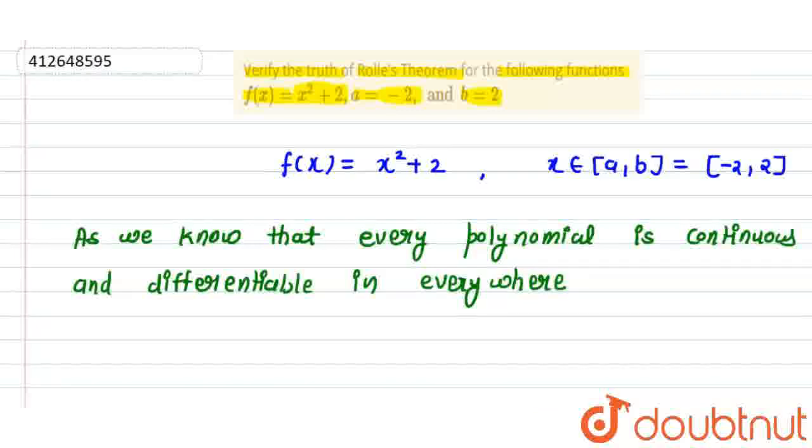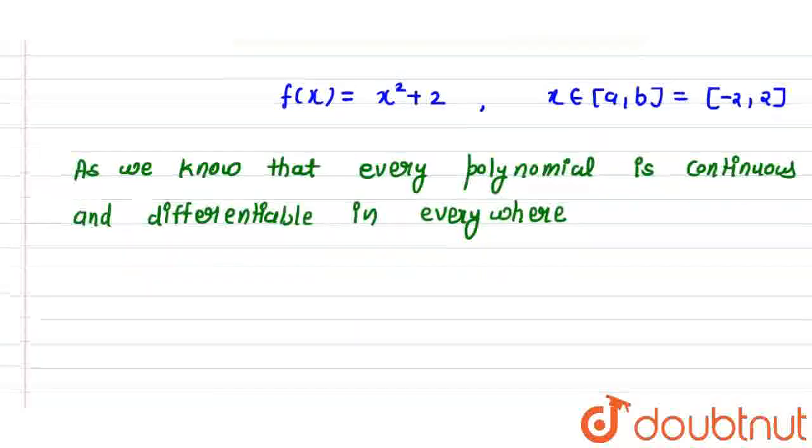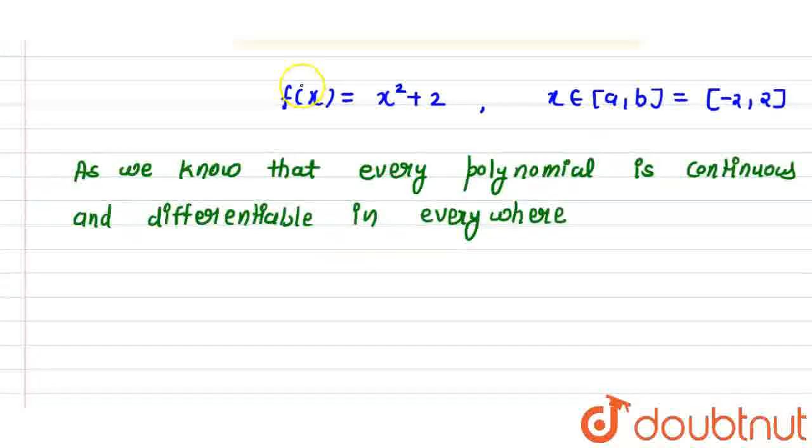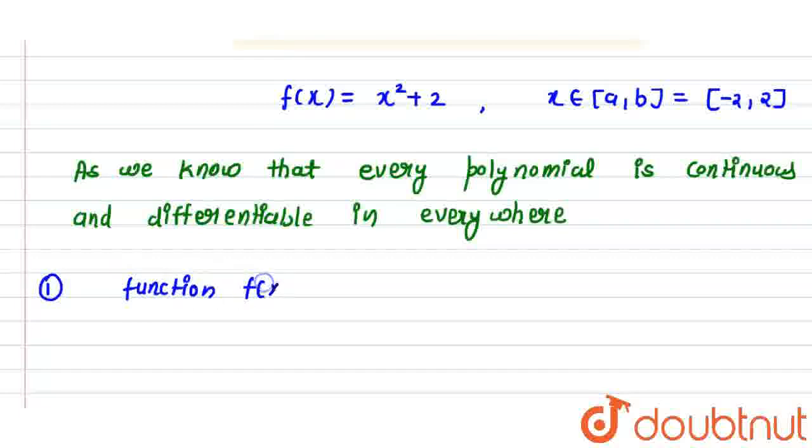So here we will write as a real line. So here we will write our first condition. That function f(x) is continuous in closed interval a to b, and a to b is minus 2 to 2. Closed interval minus 2 to 2 is continuous.